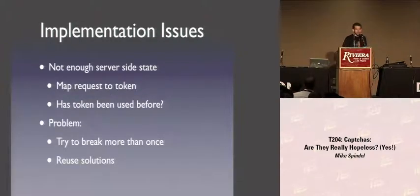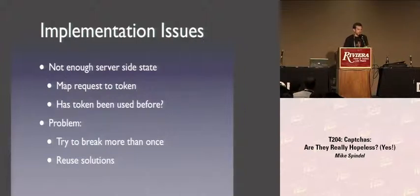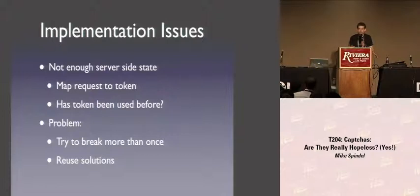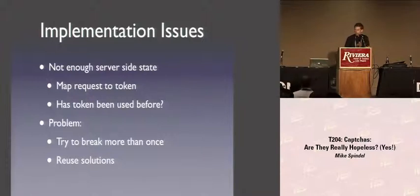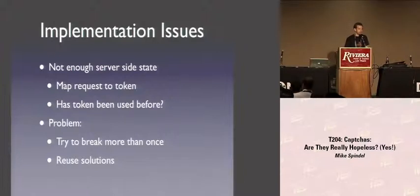One of the really common problems in lousy CAPTCHA implementations is that they don't record enough state on the server side to tell whether or not the solution is legitimate. There are two main classes of state that tend not to be recorded. In one case, people don't actually tie the CAPTCHA to a specific request — meaning someone can batch-request a large number of CAPTCHAs, solve them efficiently, and then reuse those solutions over a long period of time. Another problem is that some implementations simply can't tell whether a CAPTCHA has been used before, making it possible to reuse it several times.